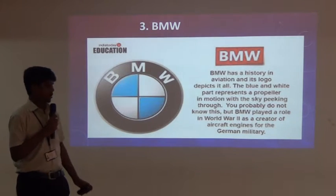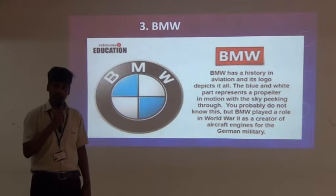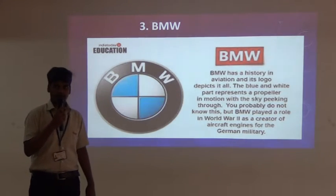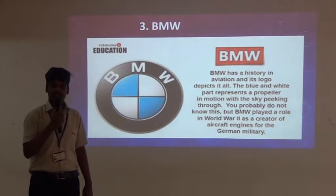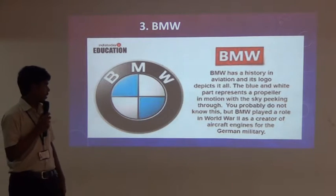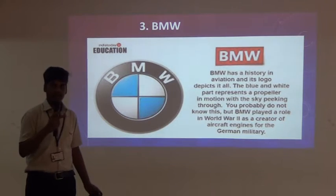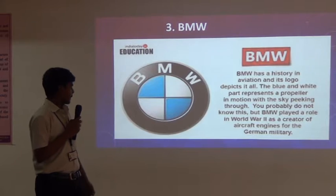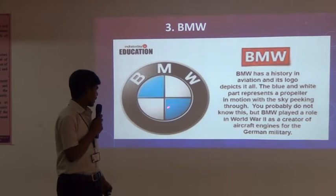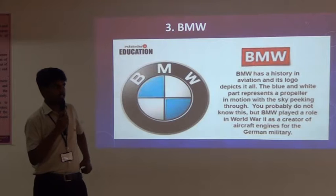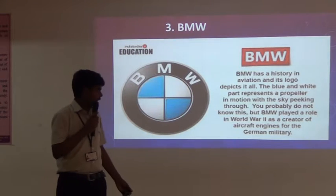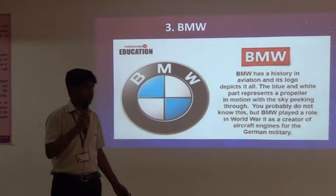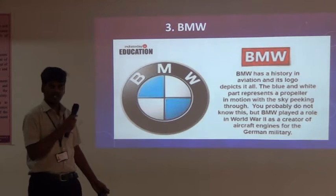BMW was one of the biggest car companies. Before starting this company, aviation planes were mainly associated with it. You can see the logo — it is a plane propeller symbol. The blue and white color represents Bavaria, where it was located in Germany.